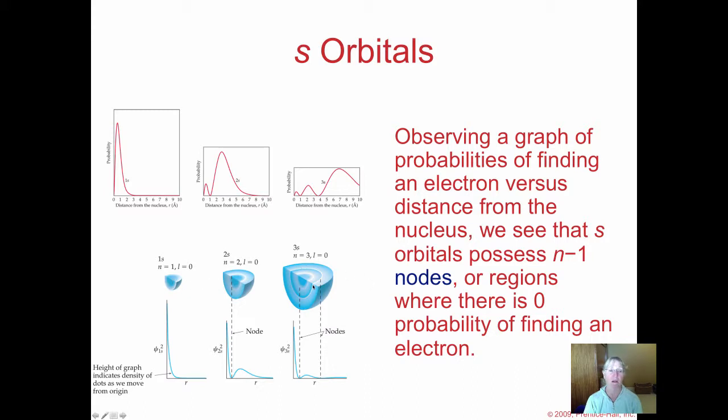This shows the 1s, 2s, and 3s orbitals all superimposed on each other. These white spaces are called nodes. The height of the graph indicates the density of electrons at a specific distance from the nucleus. At the second energy level, at this node, the probability of locating electrons is pretty much nothing. Between the first and second energy level, there's a dead zone where electrons can't be. Between the first, second, and third, there are two nodes where the probability is zero.